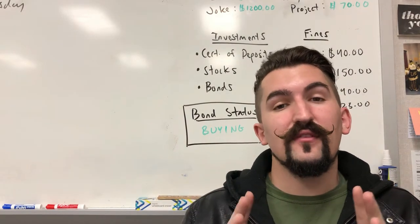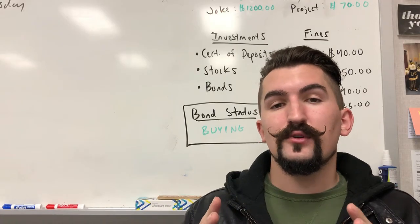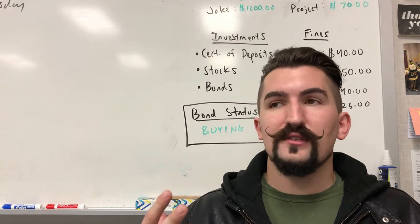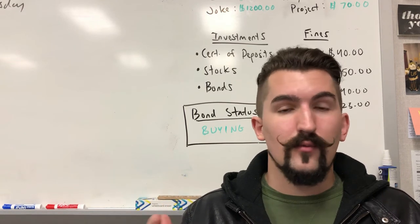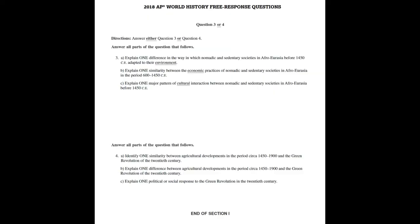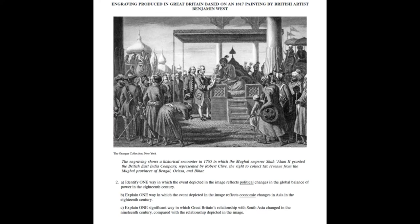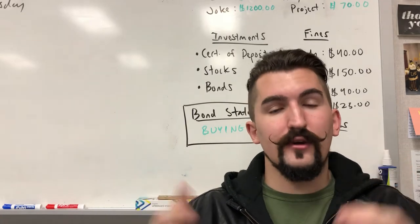There are several different types of short answers you can receive. You could receive a historiography question, where you analyze the historical arguments of historians — either providing evidence that supports their argument or evaluating which argument is stronger or weaker. Or you could have a question entirely from your own knowledge of history about big topics like the Industrial Revolution, globalization, or the Cold War. Lastly, you'll have a stimulus-based short answer question, where you receive a primary or secondary text source or image and must analyze it using evidence from the source or your own historical knowledge.